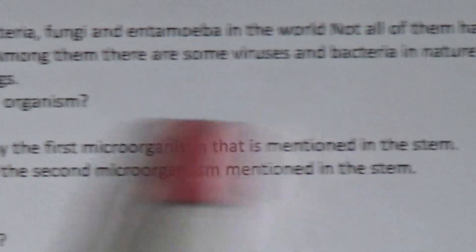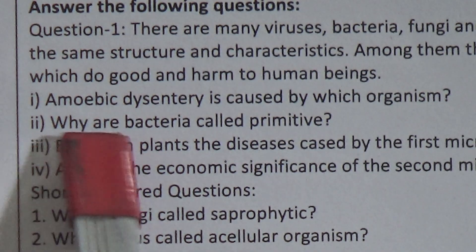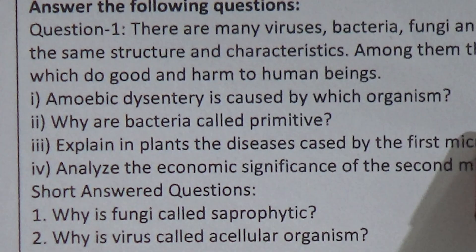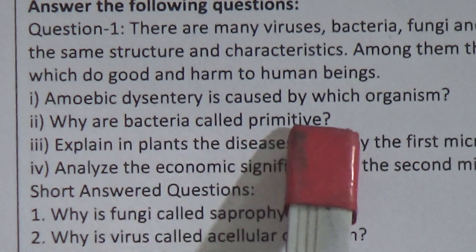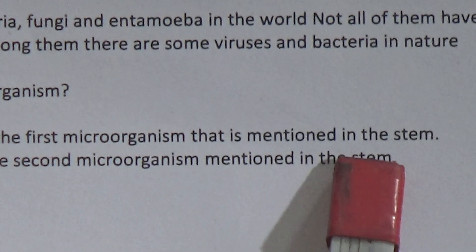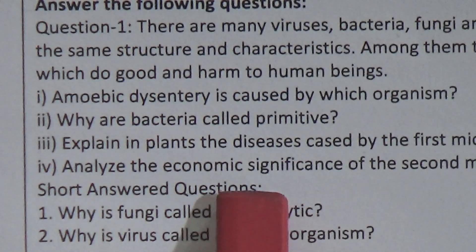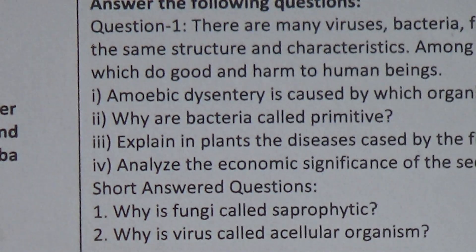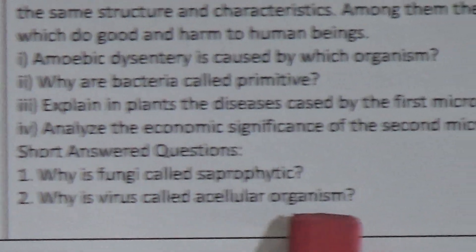Among them there are some viruses and bacteria in nature which do good and harm to human beings. Question 1 is: amoebic dysentery is caused by which organism? Question 2 is: why are bacteria called primitive? Question 3 is: explain in plants the diseases caused by the first microorganism mentioned in the stem. Question 4 is: analyze the first microorganism mentioned in the stem — the second microorganism being bacteria. Short questions: why is fungi called saprophytic, and why is virus called an acellular organism?